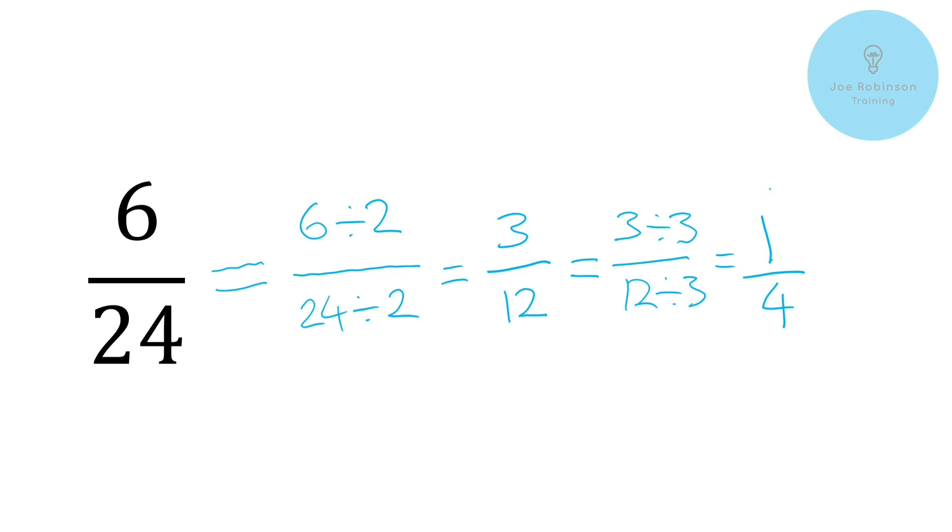So can you see there that 6/24ths, 3/12ths, and 1 quarter are all exactly the same value. They all represent exactly the same amount, we've just expressed them in different ways. So we've simplified from 6/24ths all the way down to 1 quarter. However, what we've actually done is found the equivalent fraction for this, so simplifying should always leave you with an equivalent fraction.